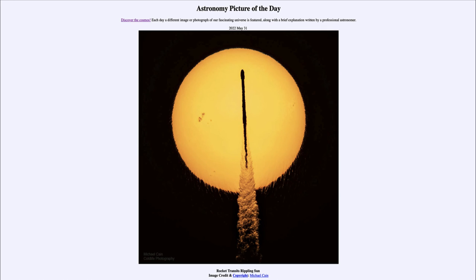In fact, this is sunspot region 3014, which is a relatively strong one. We can see a number of sunspots there off to the left — our sun with sunspots on its surface and the SpaceX Falcon 9 rocket silhouetted in front of it.